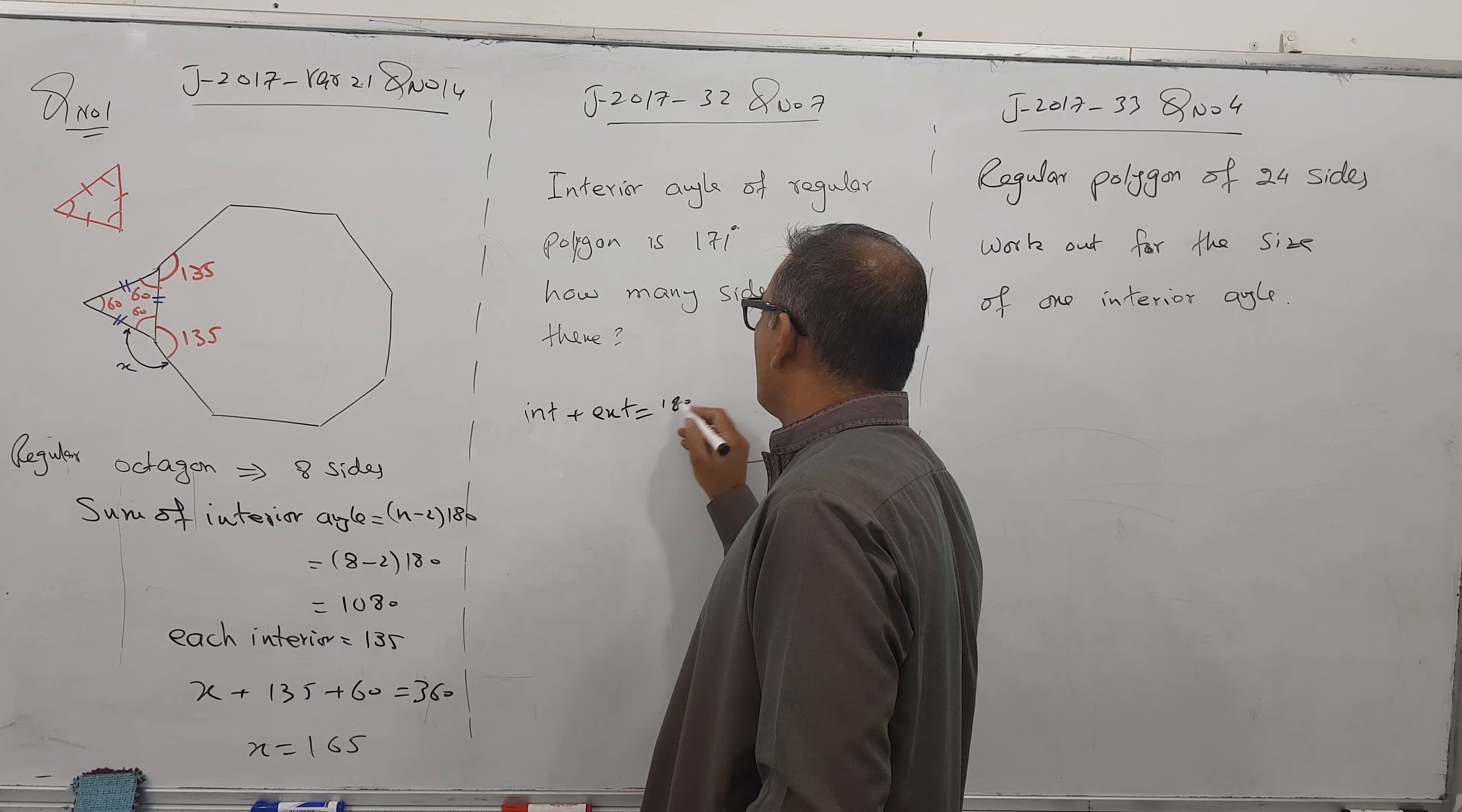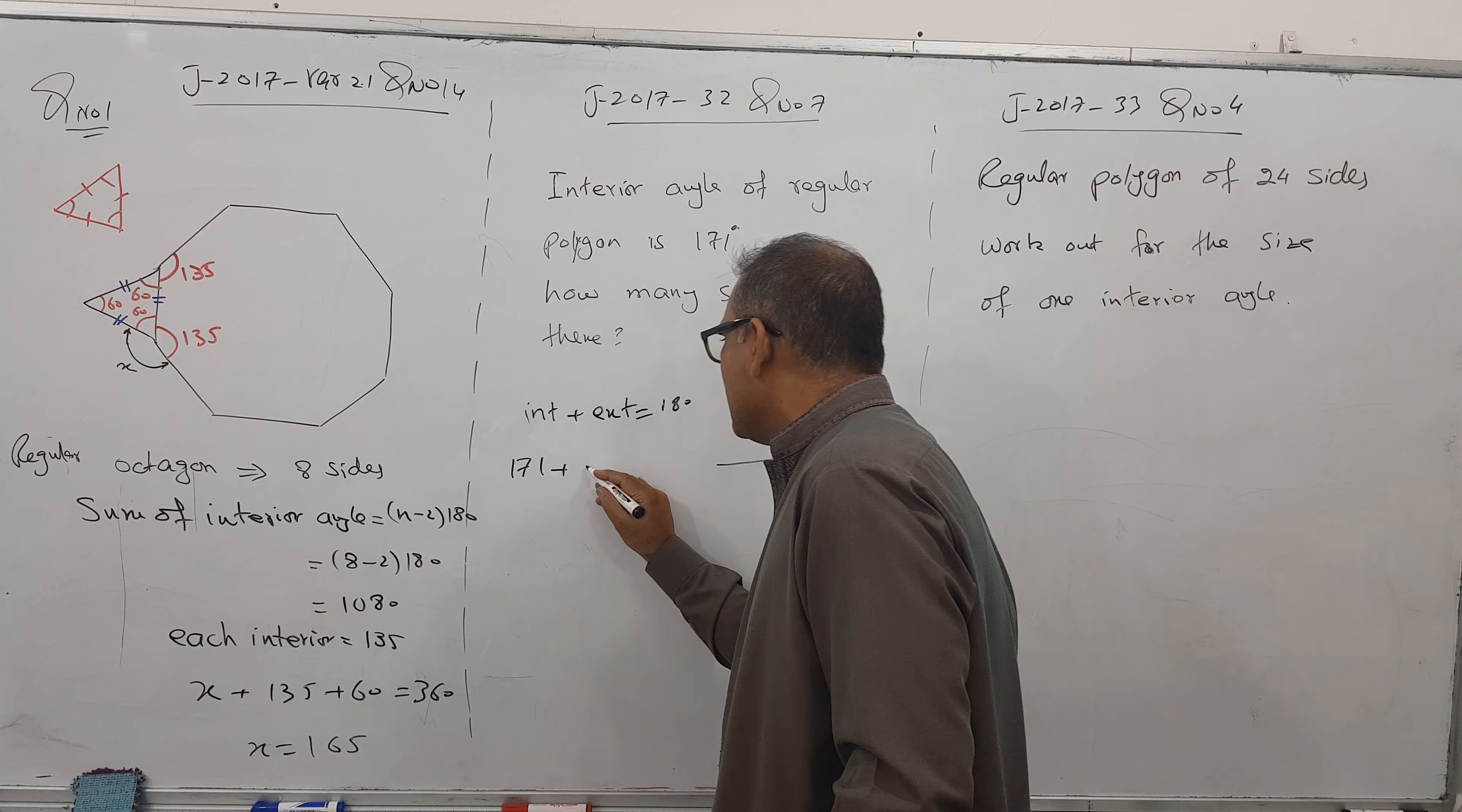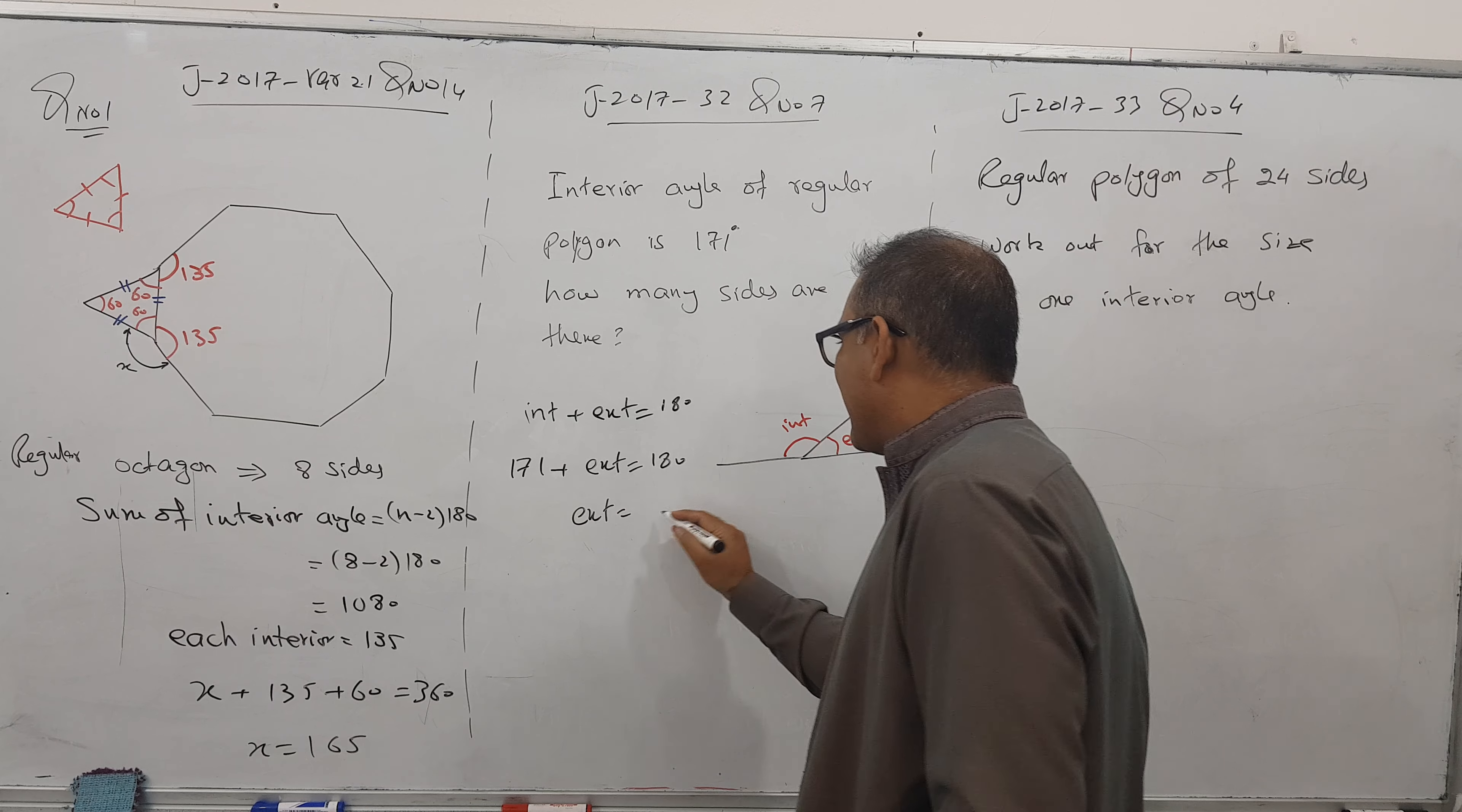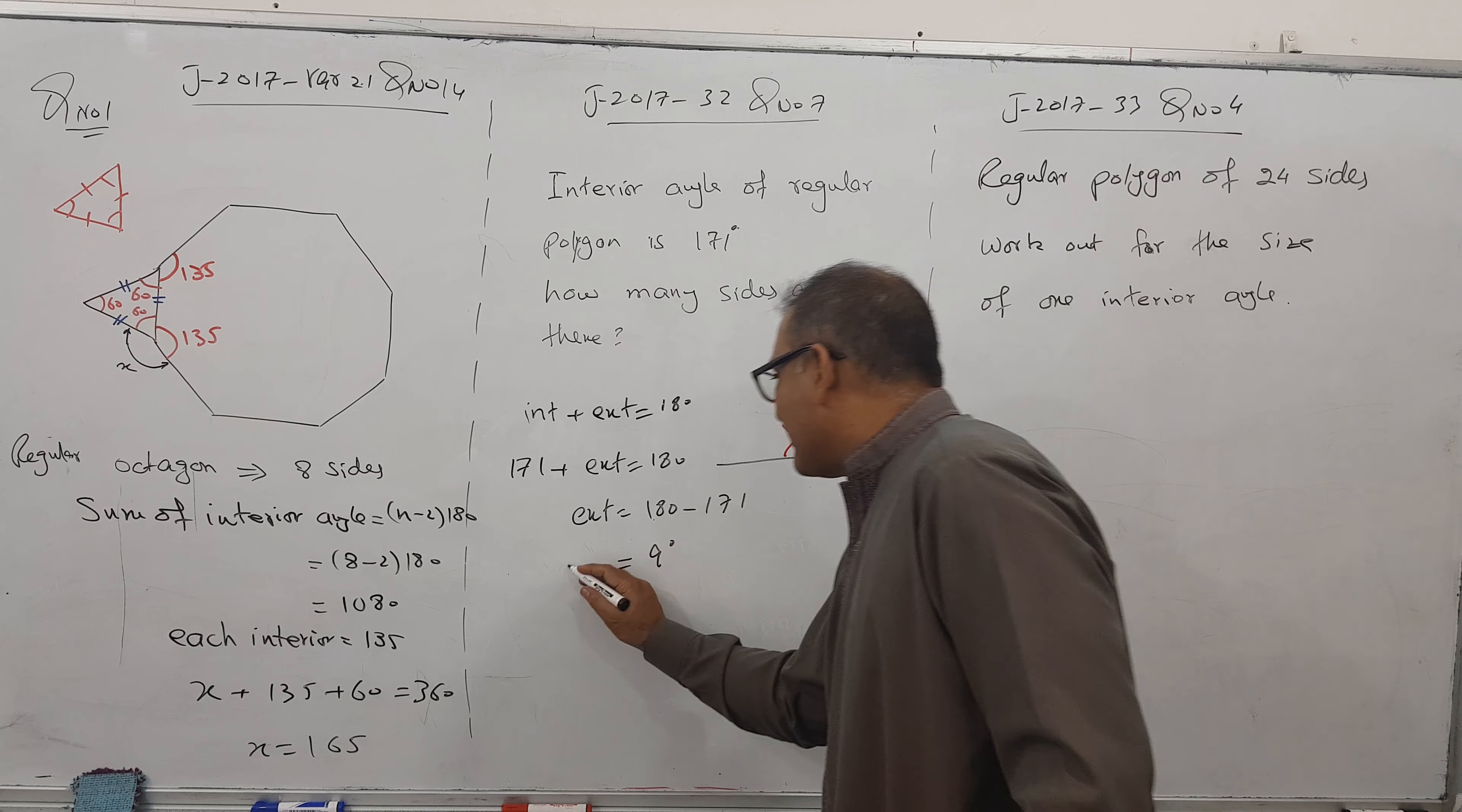Interior angle is 171, so put here 171 plus exterior angle equals 180. So exterior angle is 180 minus 171, I got 9 degrees. So it means 9 degrees is the exterior angle.